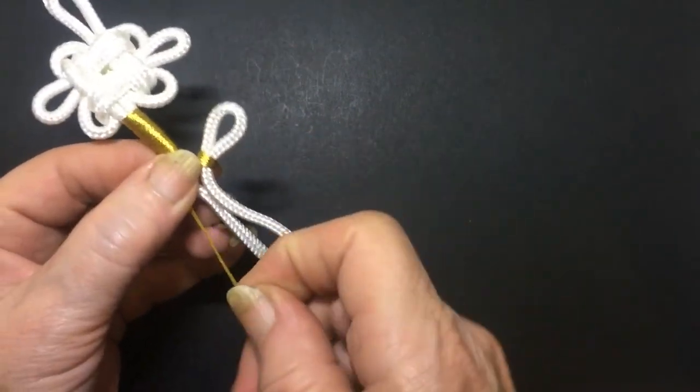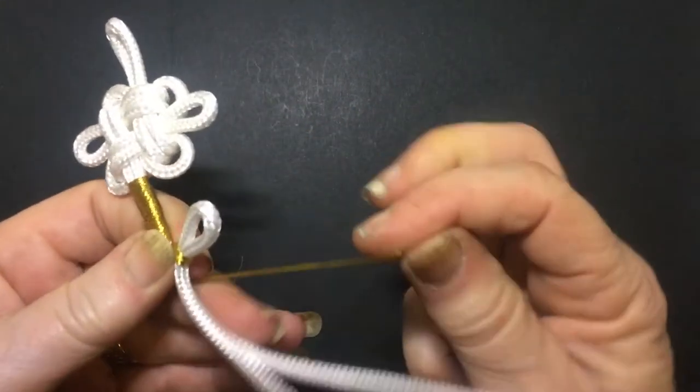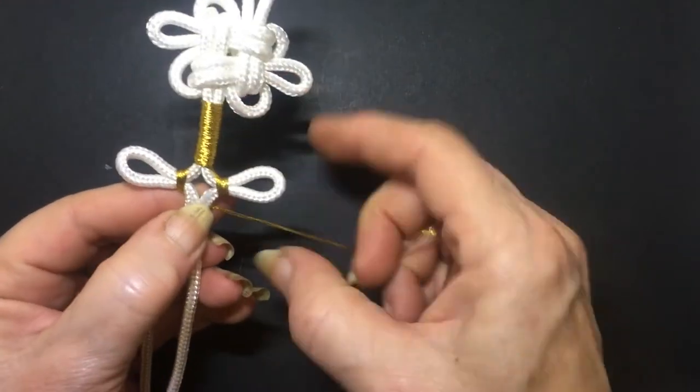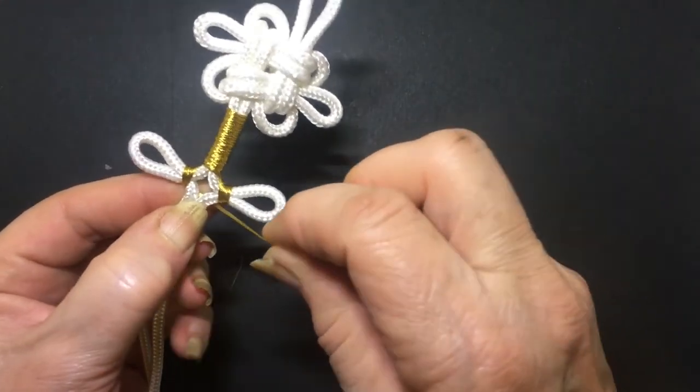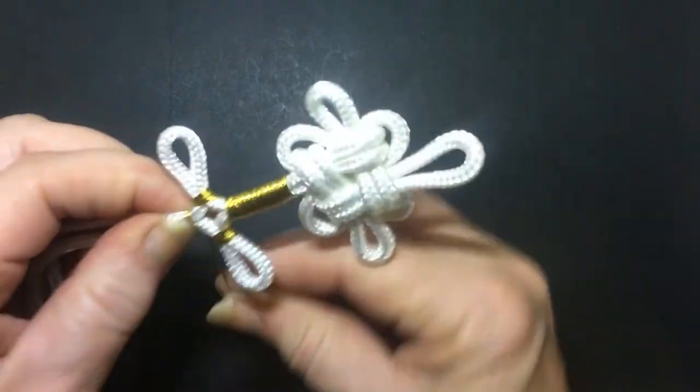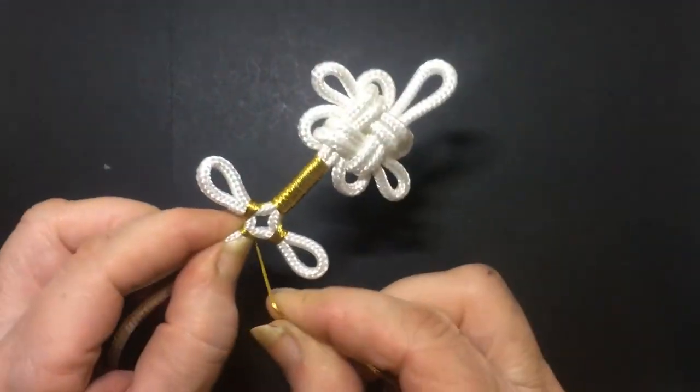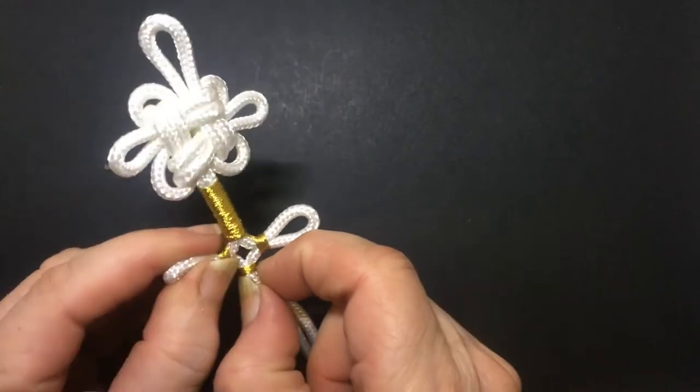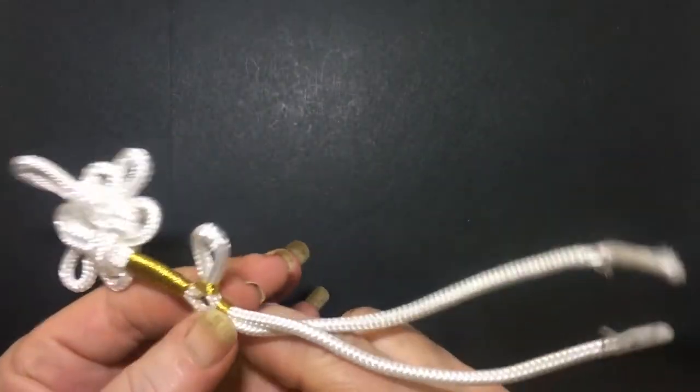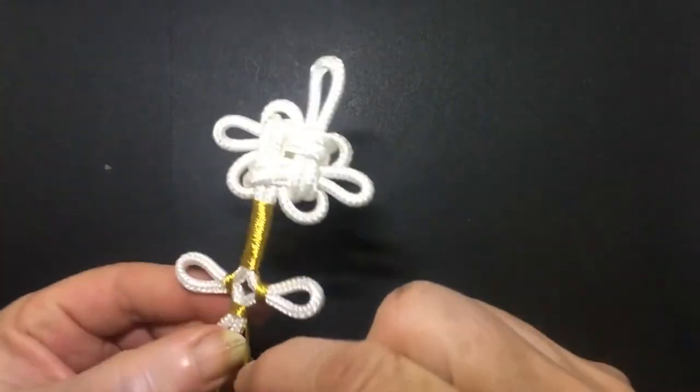So once again, going to the back of it, so your crosses are all going on the back of it, you're now going to go around the bottom. Now I'm going down one centimeter on the bottom as well. So just go down one centimeter.